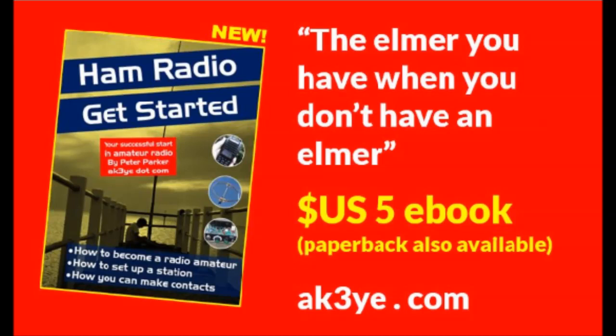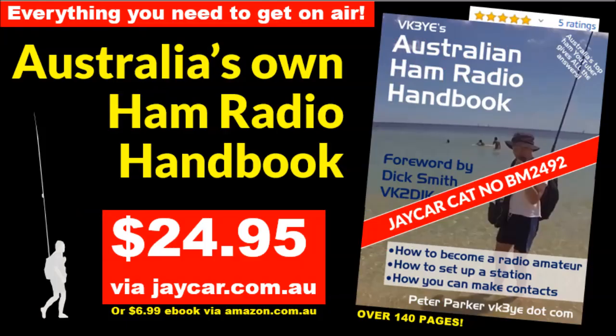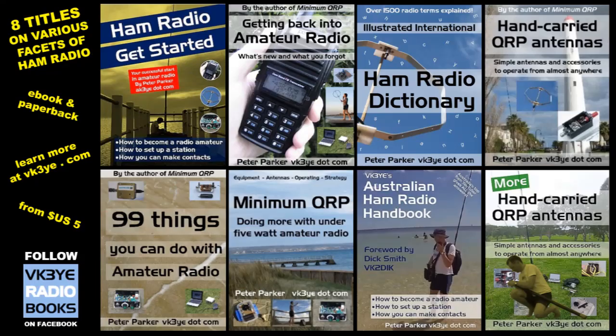If you're getting started in amateur radio, there's some books I think you should consider. If you're in the United States, Ham Radio Get Started is the book for you. It talks a lot about what amateur radio offers and how you can get started. A lot of hints and tips, especially if you're just getting on the air. In Australia, a very similar book, but for Australian conditions, is the Australian Ham Radio Handbook. Also when you're online and ordering, consider also 99 Things You Can Do with Amateur Radio, and also the Ham Radio Dictionary. There's definitions for something like 1,500 terms. So those books I think are good if you are getting started in amateur radio.